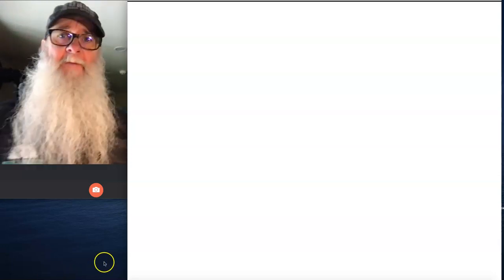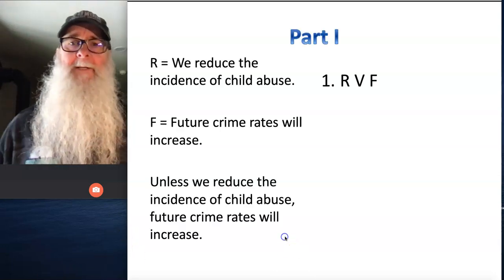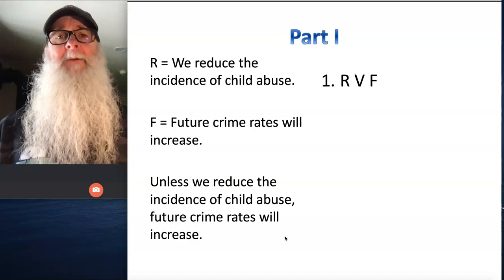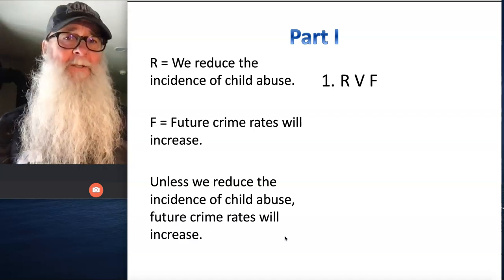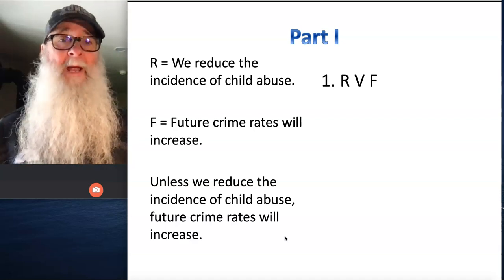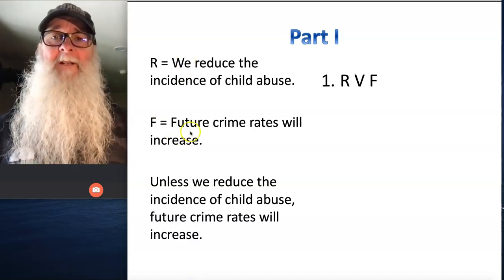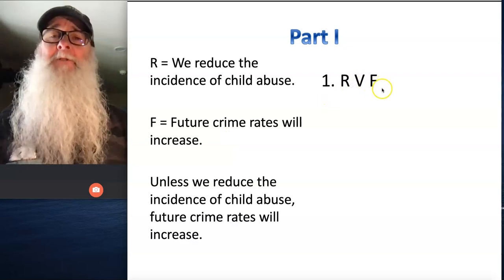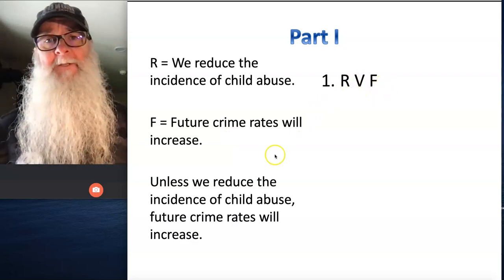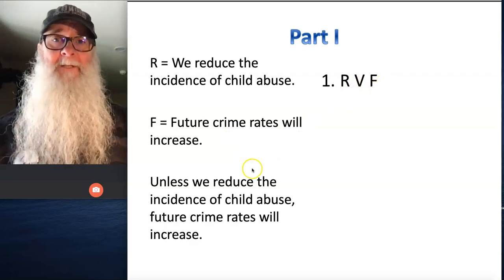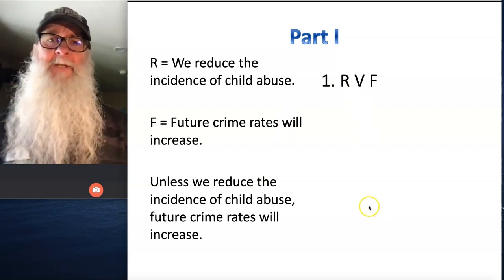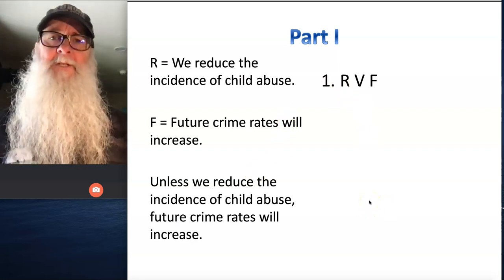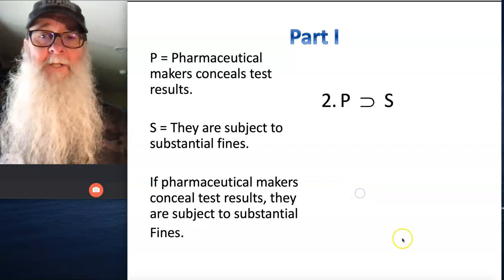Let's take a look at your work from part one. Number one is an unless statement, and typically we translate those as disjunctive statements with a wedge. So using R and F as our propositions, number one is R wedge F. If you chose different letters to represent the propositions, that's fine. You just want to make sure that you have number one translated as a disjunctive statement using the wedge.